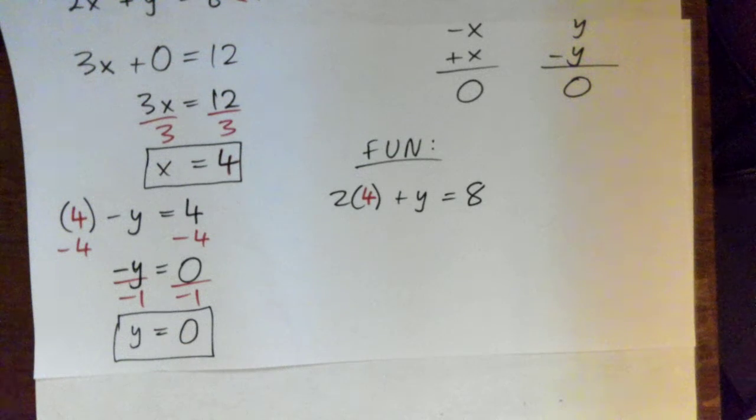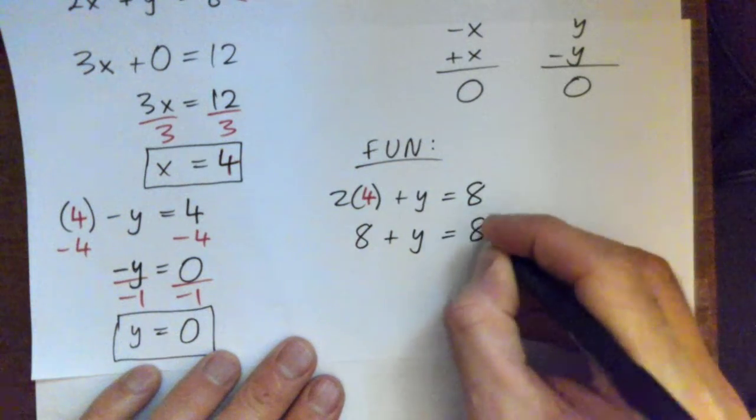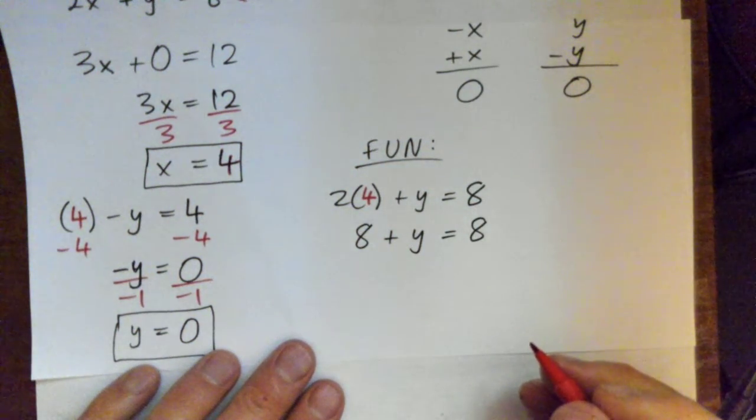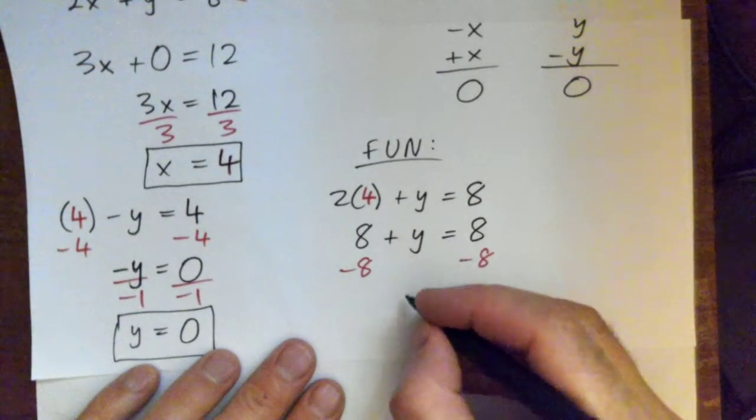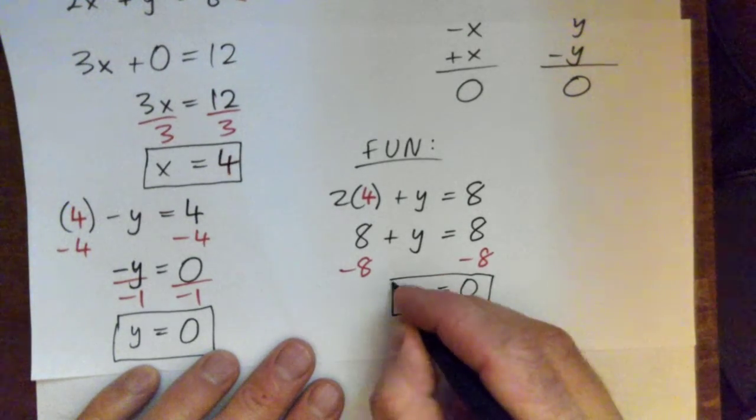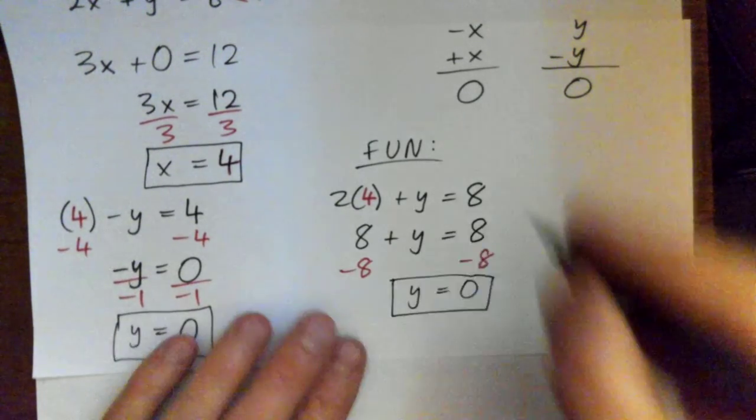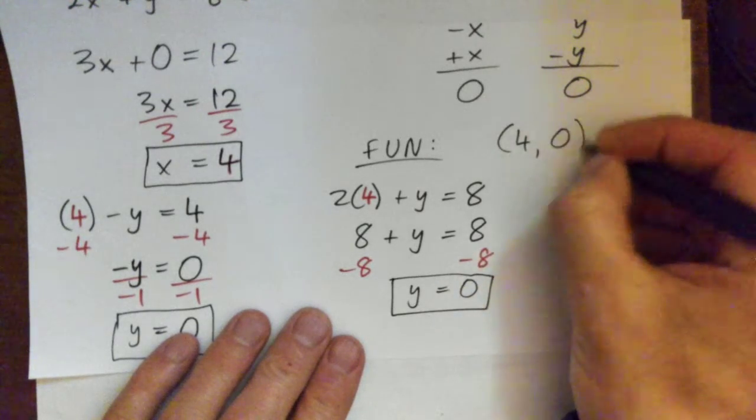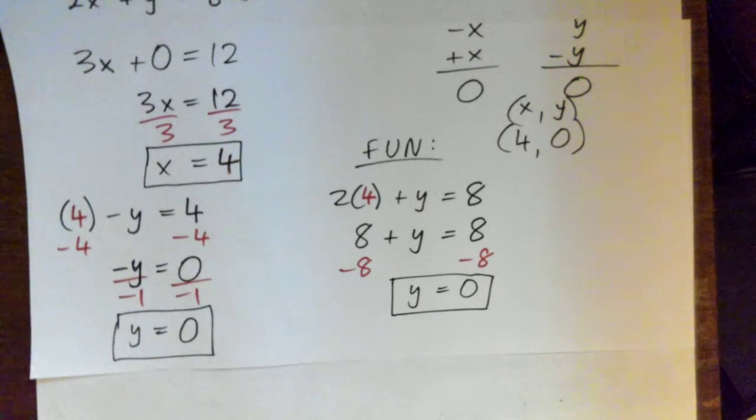Yeah, go through the steps though. So 2 times 4 is 8 plus y equals 8, and then subtract 8 from both sides. Y equals 0, right? You know that. Good. So x is 4, y is 0. You can write the answer like this: (4, 0). That's like x, y. X is 4, y is 0.